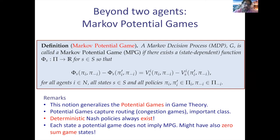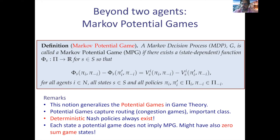In single-agent settings, we know there is an optimal policy that is deterministic — for every state you choose one action with probability one. For multi-agent settings, you don't generally expect deterministic policies; I can give examples where no deterministic Nash policy exists. But in the case of Markov potential games, it can be shown that deterministic Nash policies always exist.